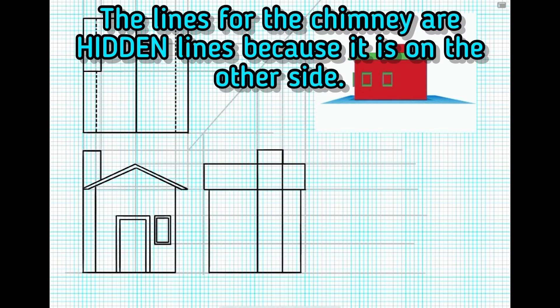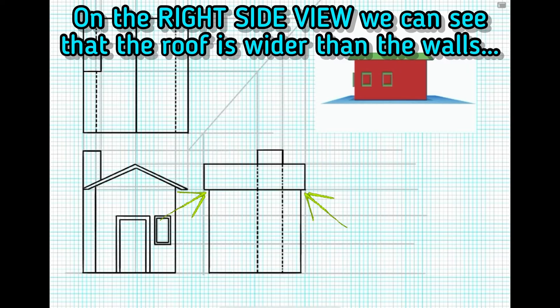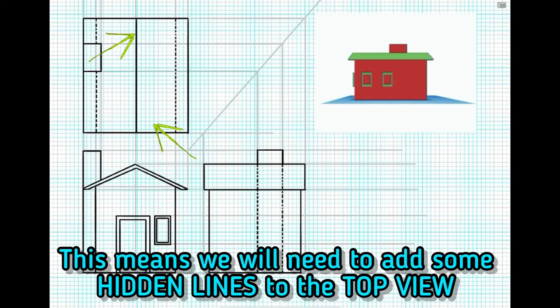The lines for the chimney are hidden lines because it's on the other side. On the right side view, we can see that the roof is wider than the walls. This means that we'll need to add some hidden lines to the top view.